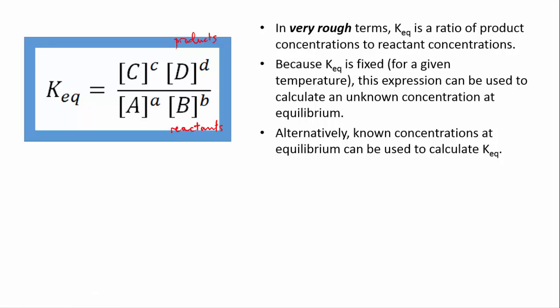Because KEQ is fixed, because it's a constant, if you know the concentrations of three of your species in this situation where we've got four altogether, you can work out what the fourth should be. You could also determine experimentally the concentrations of all of the species involved, and then use those to work out KEQ for a reaction. We're going to practice a few of these types of problems.